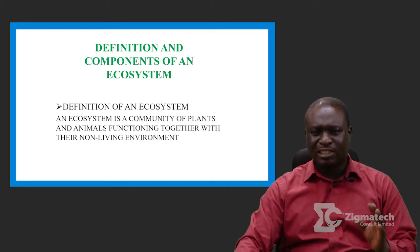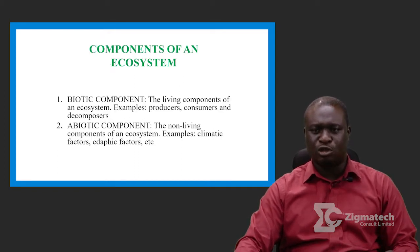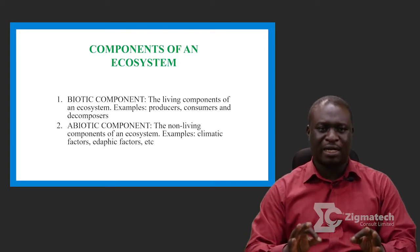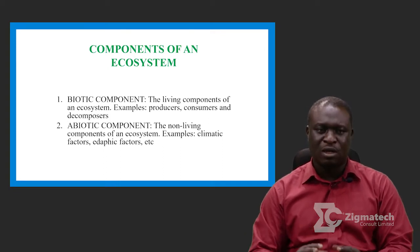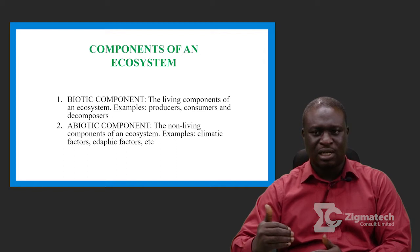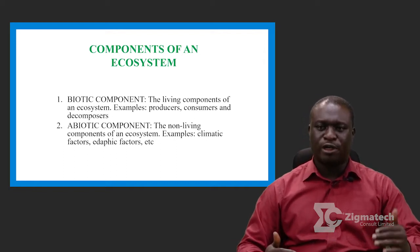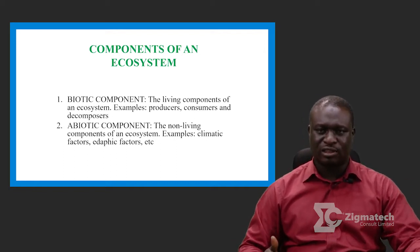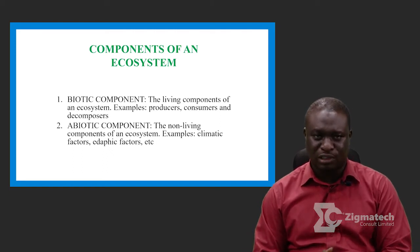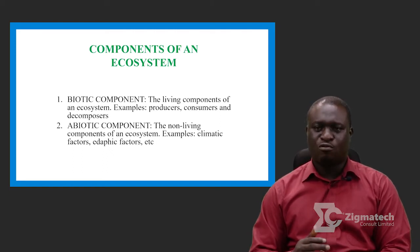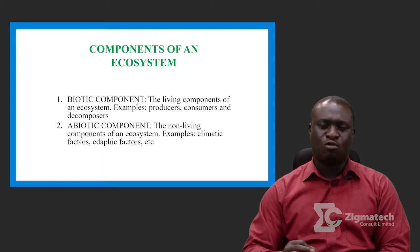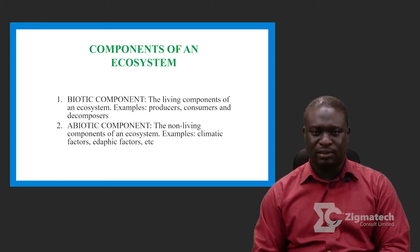If you listen to that definition, you will discover two components that make up an ecosystem. We said it is a community of living things, and we also said it is functioning with non-living things. Based on this, we have two components of an ecosystem: we have what we call the biotic component, and we have what we call the abiotic component.